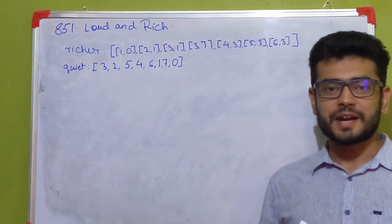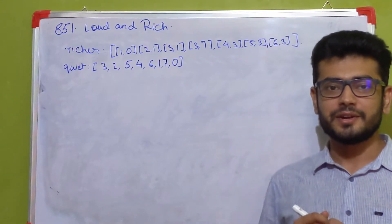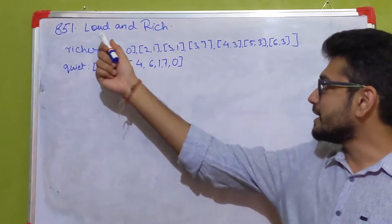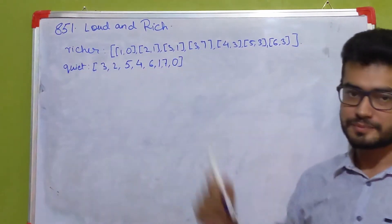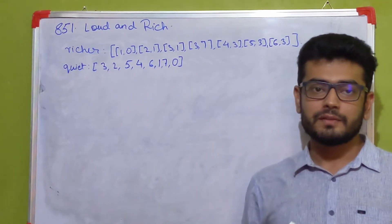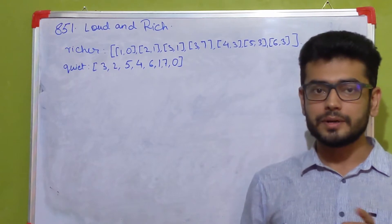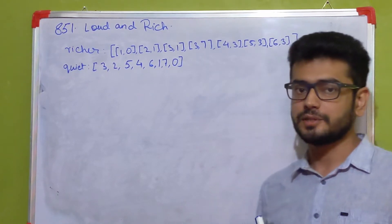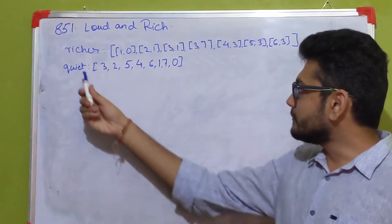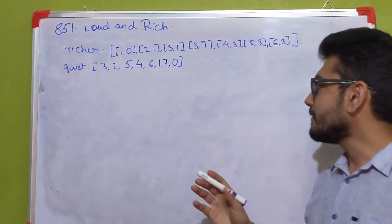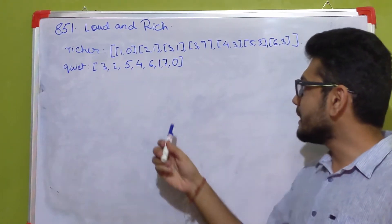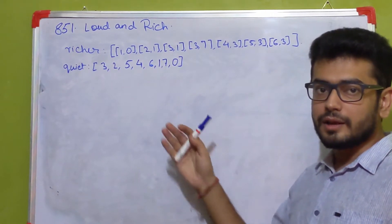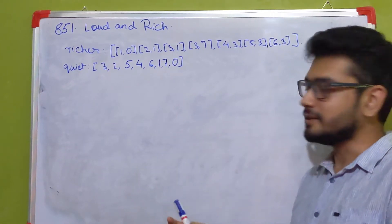Hello everyone, welcome back to the Helgeek Arena. Today we are going to discuss another very interesting problem on LeetCode which is 'Loud and Rich'. In this problem you have been given n number of people numbered from 0 to n-1 and a couple of pieces of information. The first one being the richer array, which is a representation of a relationship between two people representing which one is richer than the other.